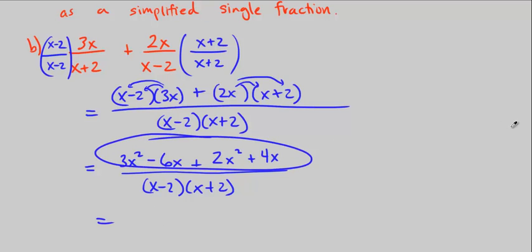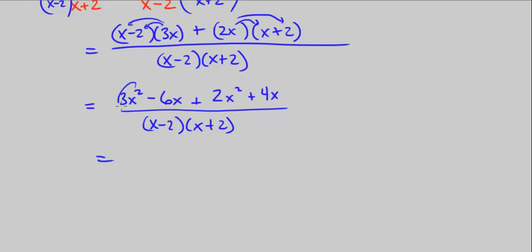Let's go ahead and combine like terms. So we have a 3x squared and a 2x squared. So that's 5x squared. Minus 6x plus 4x, so it's minus 2x. Over x minus 2 times x plus 2.